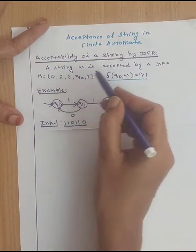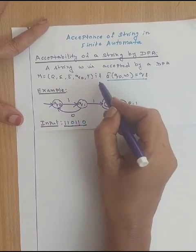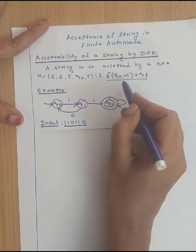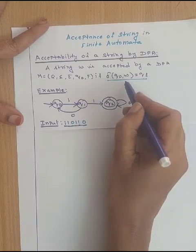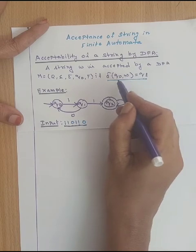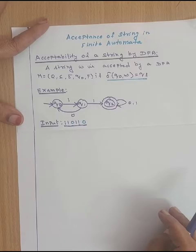A string W is said to be accepted by a DFA if and only if delta of Q0, W is equal to QF. That is, for the given input string, if we are able to reach the final state from the initial state, then the string is said to be acceptable. From the formal definition we know that for one particular state and one particular input we can have only one next state.